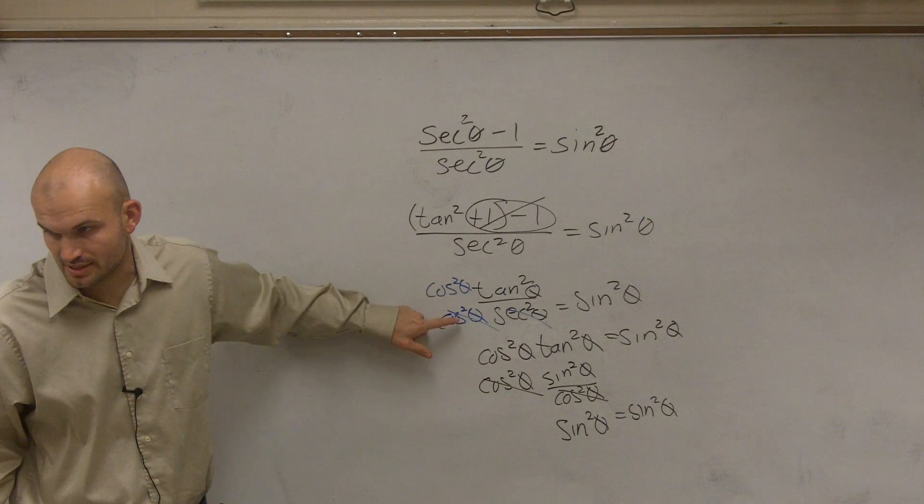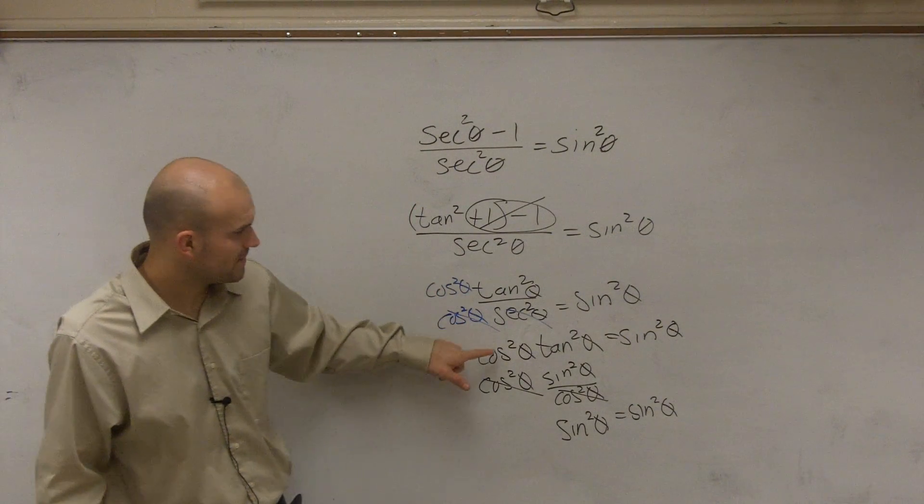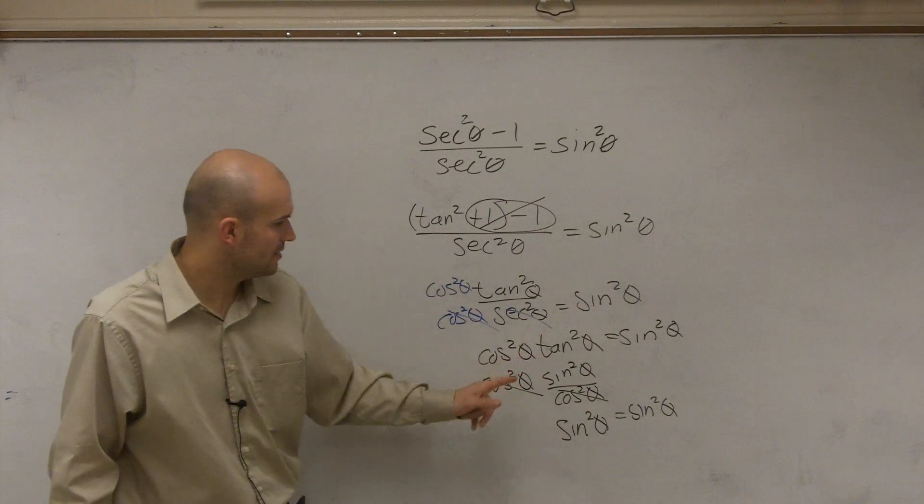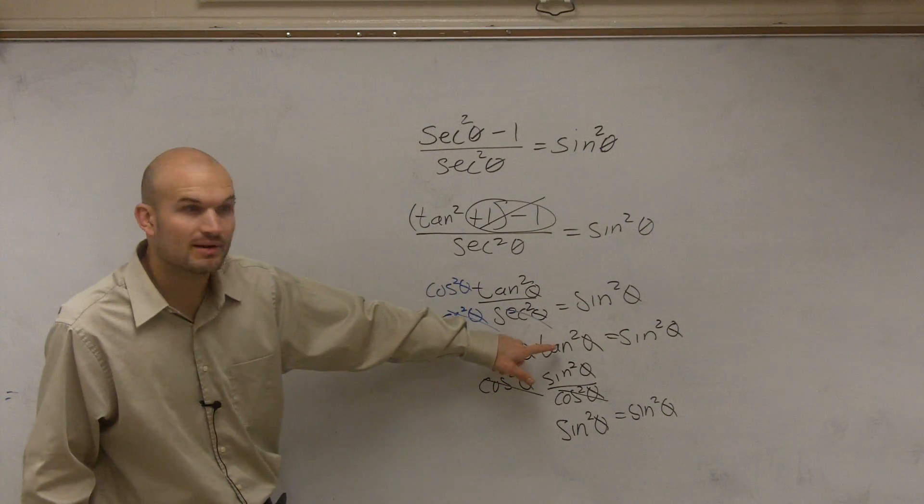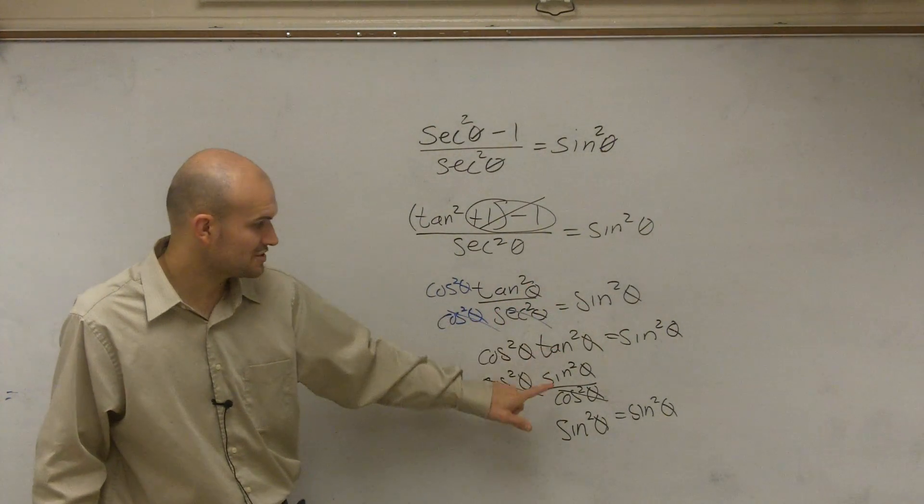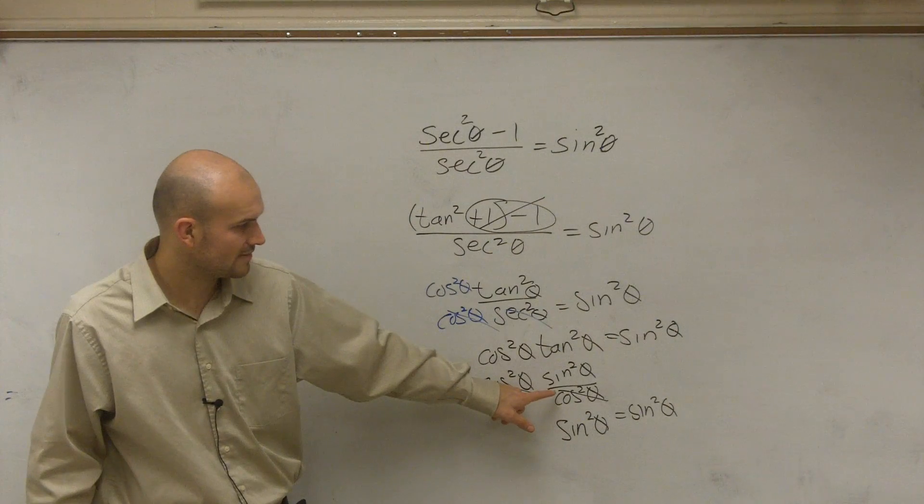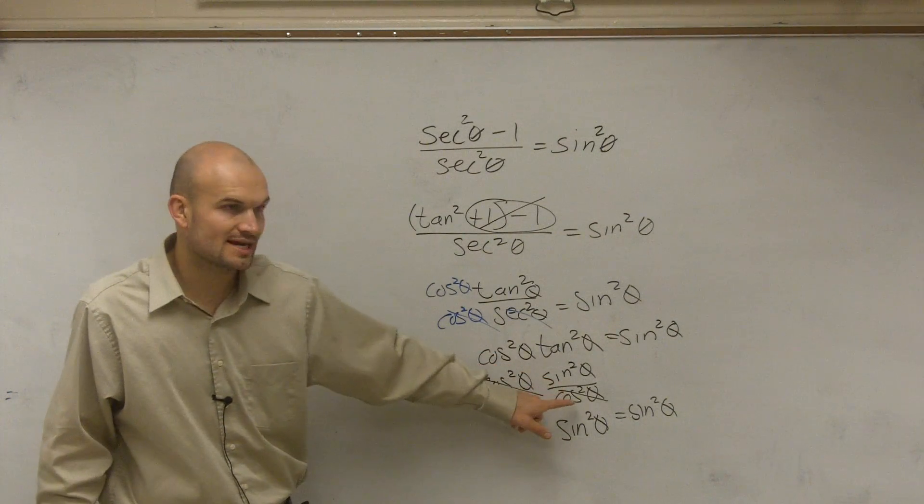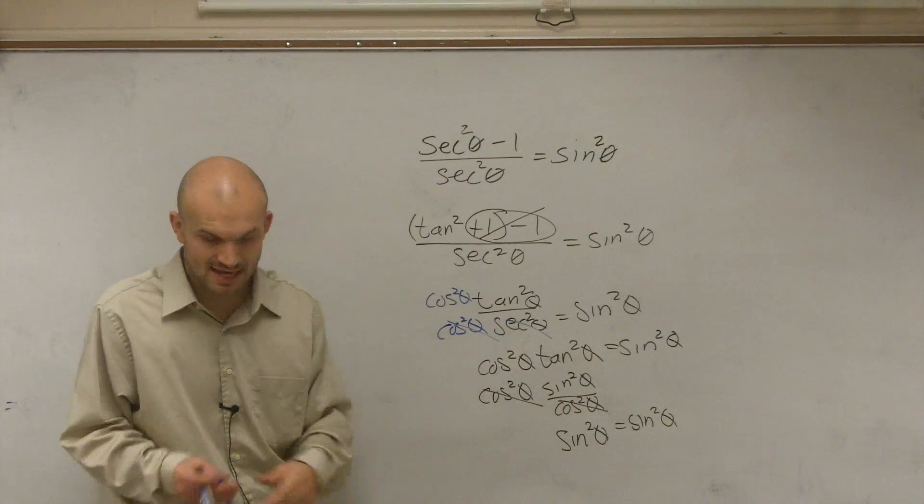Did you follow me from here? I multiply by cosine over cosine, right? And then I multiplied cosine times tangent equals sine. Well, I converted tangent by using the quotient identity. Tangent is converted to sine over cosine. So therefore, the cosines divide to 1, so I'm just left with sine equals sine.